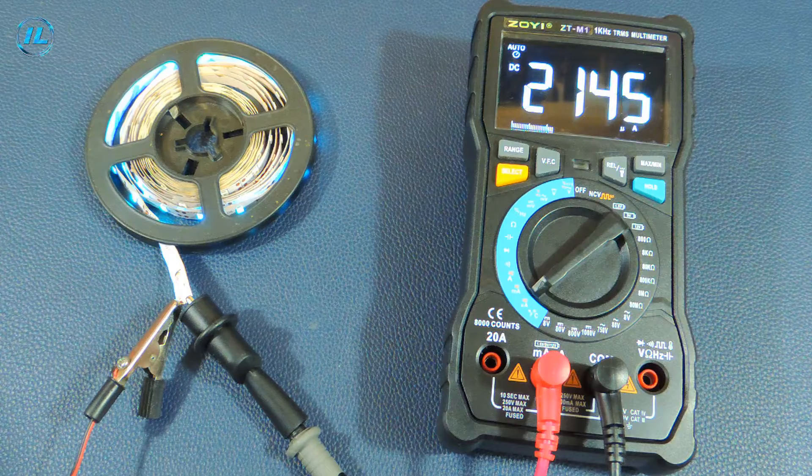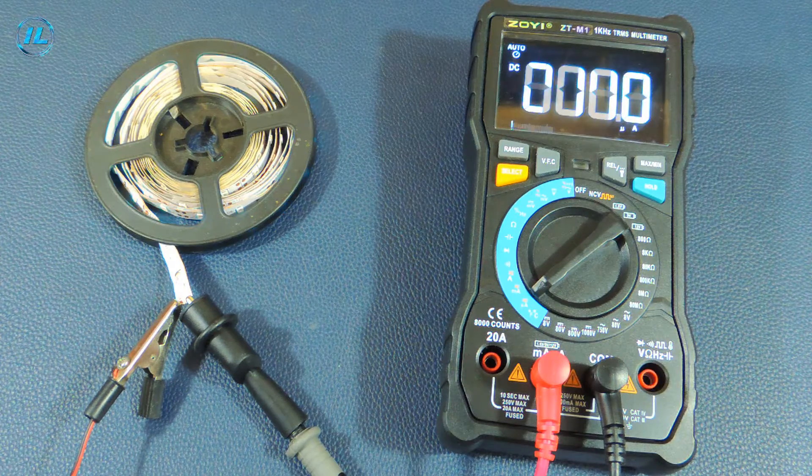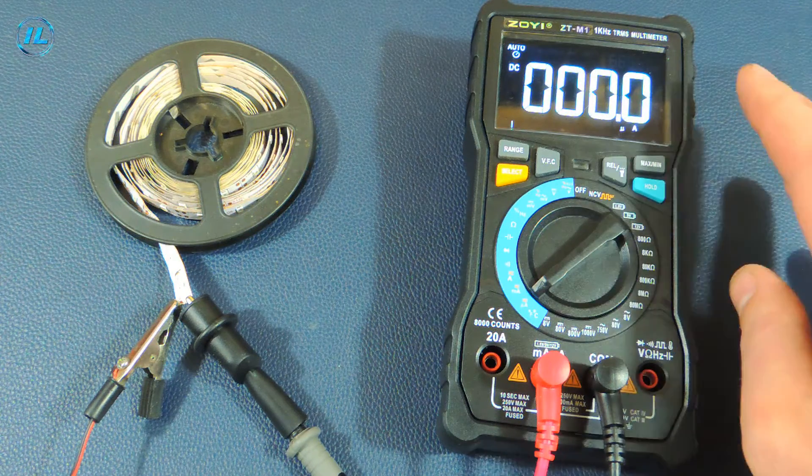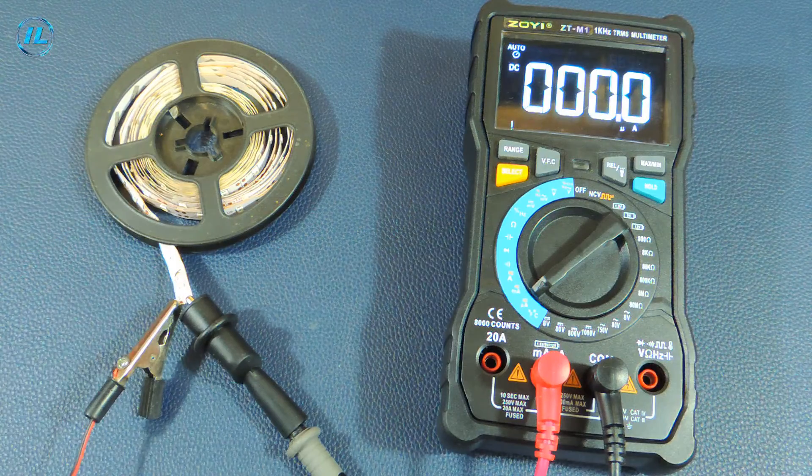2150 micro amps, that is, 2.15 milliamps. As you can see, this multimeter measures small currents very well.